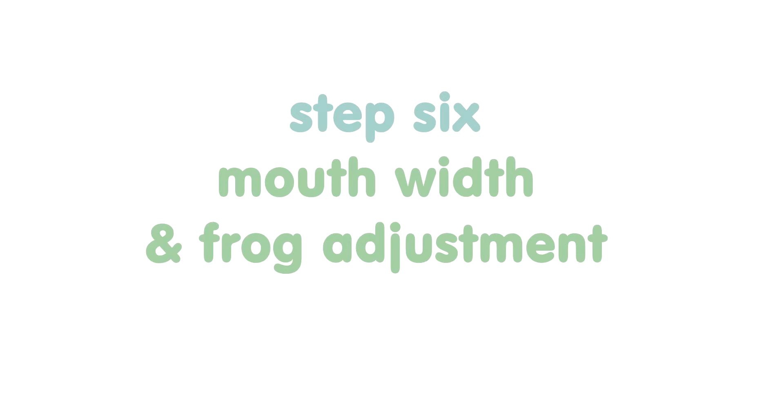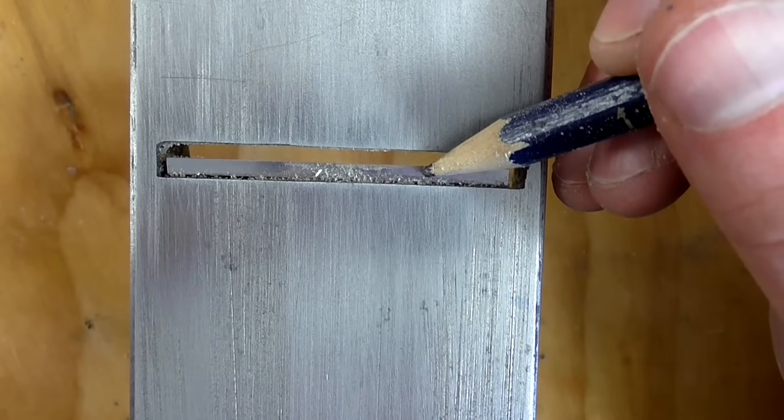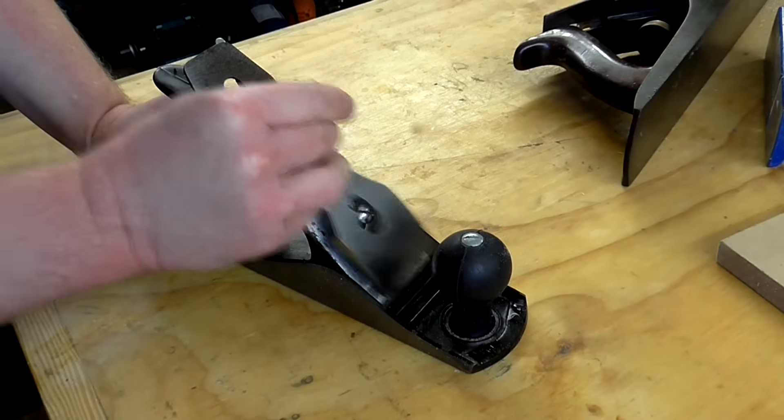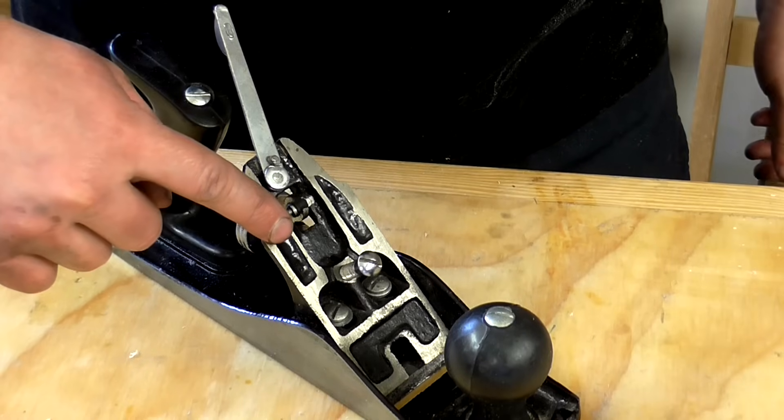Mouth width and frog adjustment. The distance between the front of the mouth and the cutting iron can be increased or decreased depending on how much material you want to remove with the plane. To adjust it, remove the lever cap, cap iron and cutting iron. This part of the plane is called the frog.